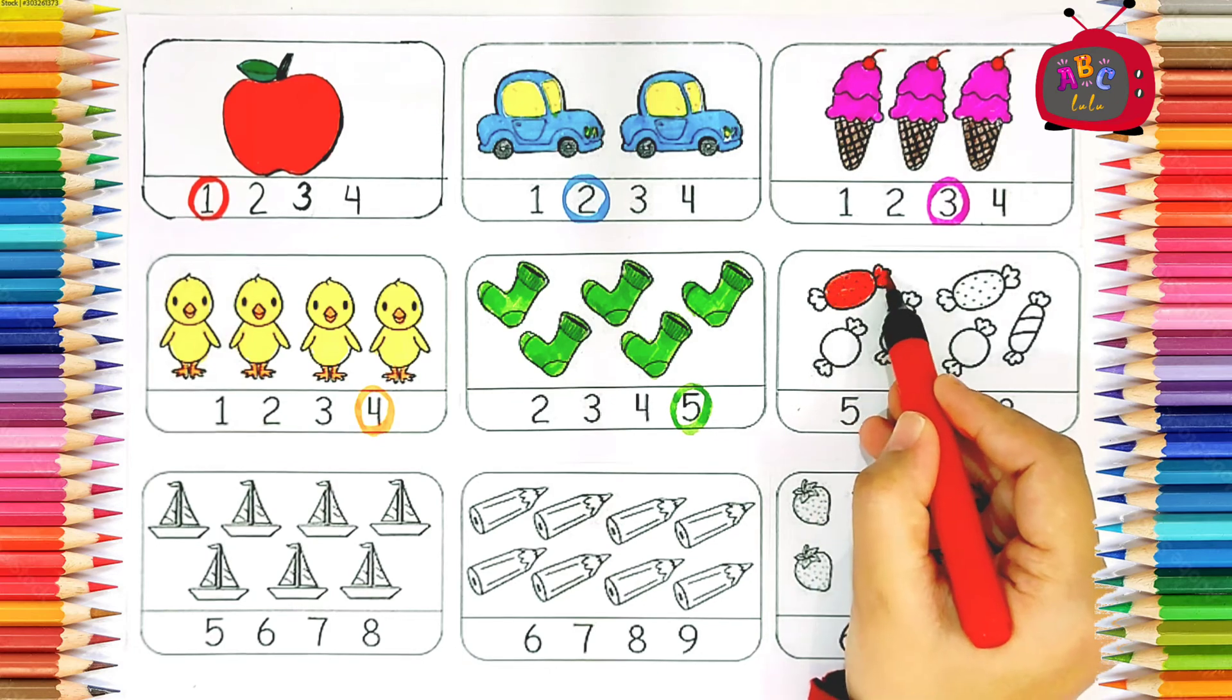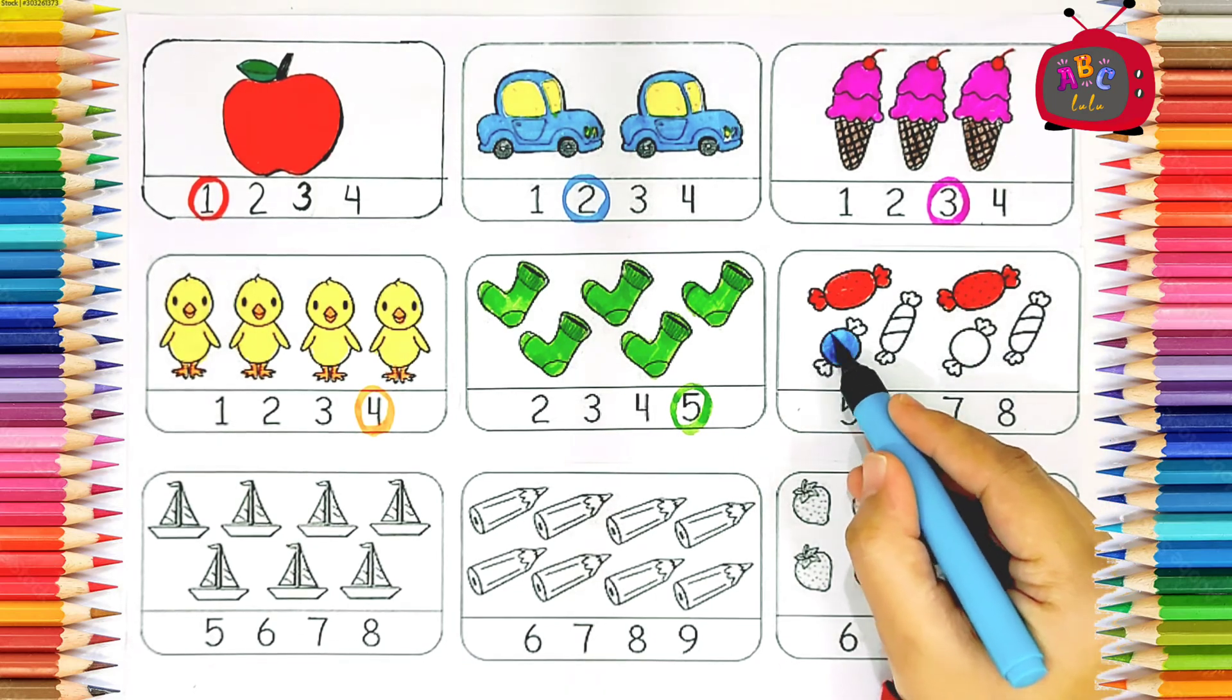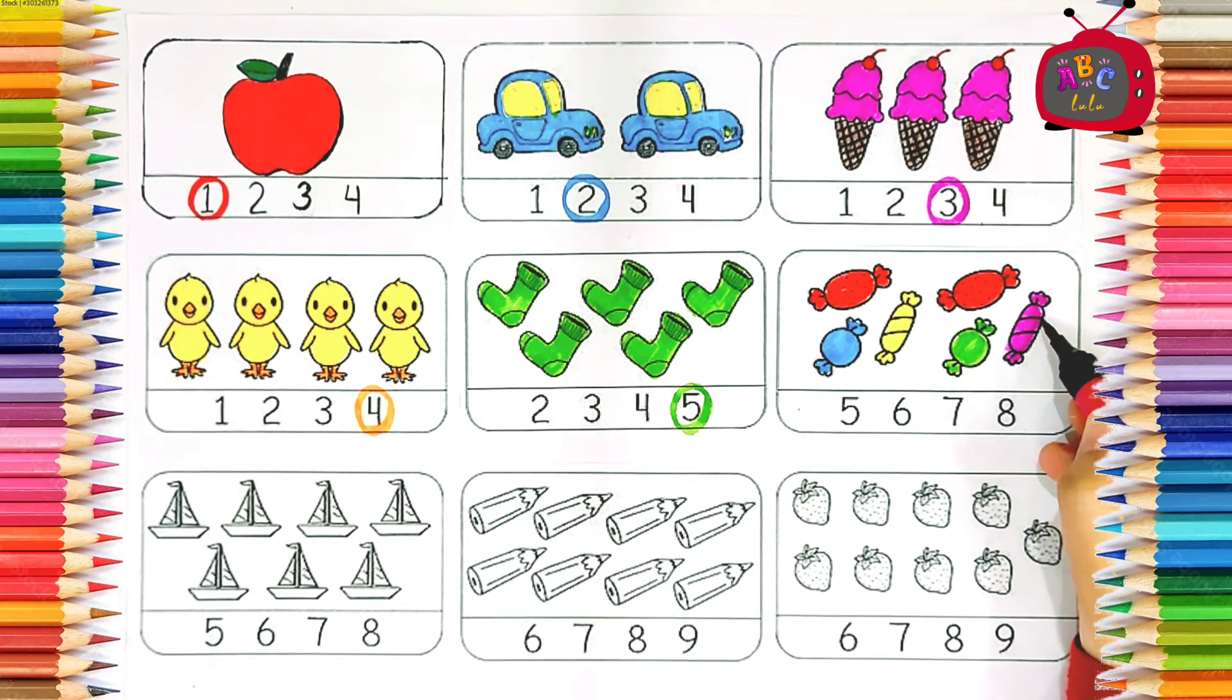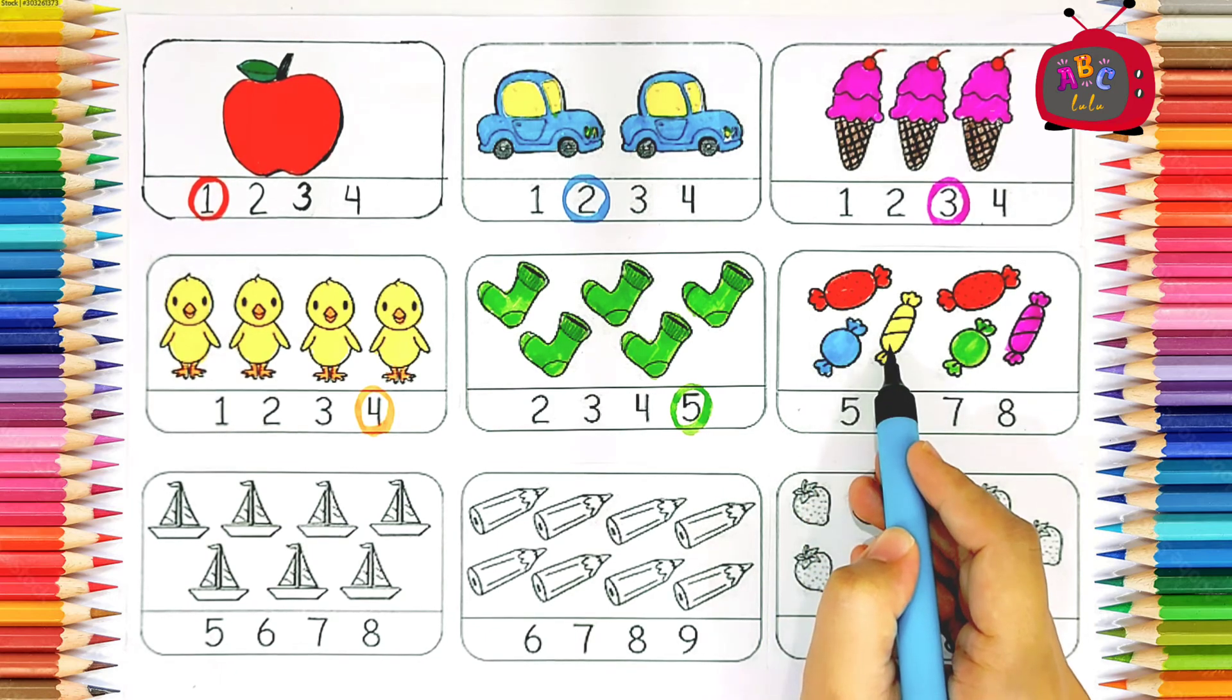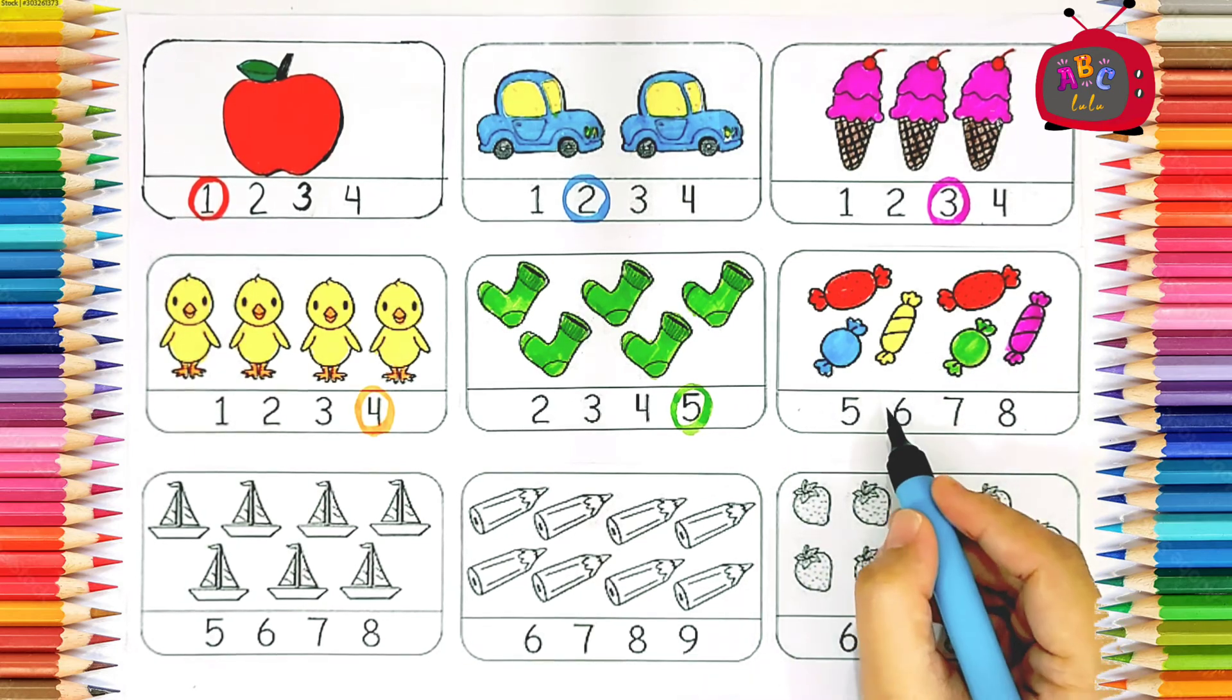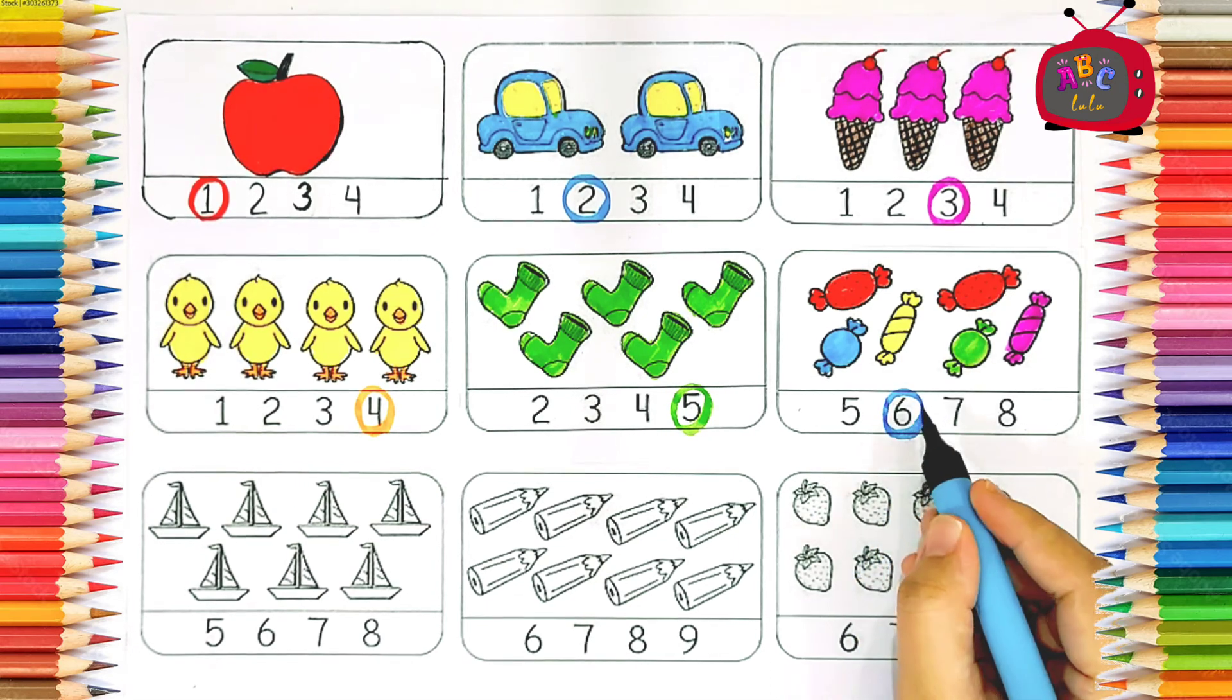Candies. Five. Five. Six. Four. Six. Three, four, five, six. Six candies. Where is six? Six. S-I-X. Six.